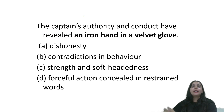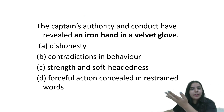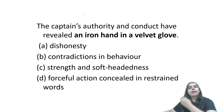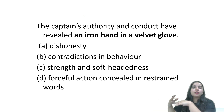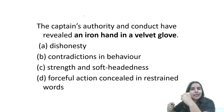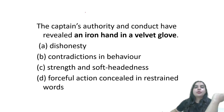The captain's authority and conduct have revealed an iron hand in a velvet glove. Now imagine — velvet glove, velvet is a fabric, it's very soft. If there is an iron hand under a velvet glove, it means that the outer thing looks very soft, but inside it's very hard, or you can say very strict.